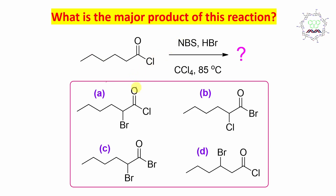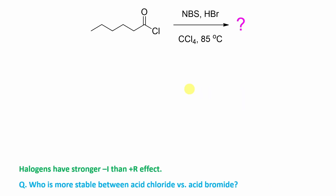What is the major product of this reaction? If you look at this reaction, this is acetyl chloride with NBS and HBR. This question is a little different from the basic concept point of view. First, learn what NBS actually is. NBS full form is N-bromosuccinimide. This is succinic acid amide where nitrogen is attached to bromine, and because of electronegativity difference, this bromine is delta-plus and nitrogen is delta-minus. This means bromine is electrophilic in nature.